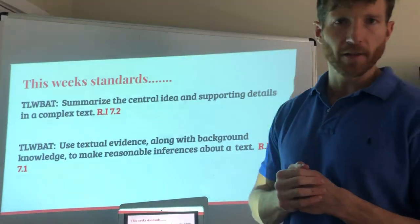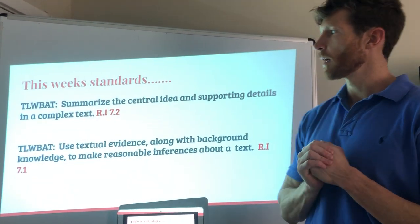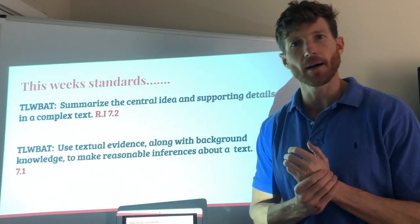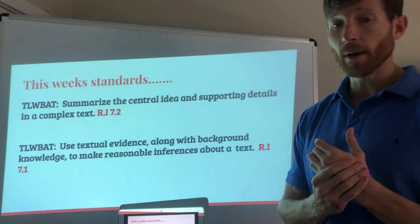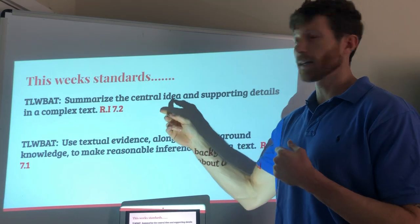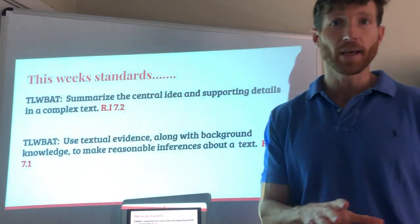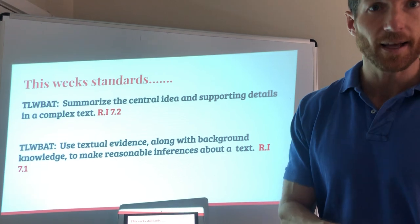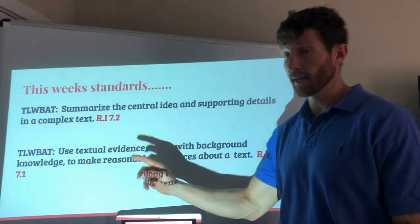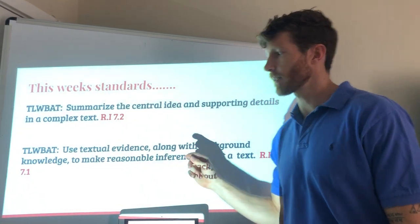Our standards for this week: we've got RI 7.2 — summarize a central idea and supporting details in a complex text. When we last left school we were really working on finding the central idea in a complex text. This week we're going to take that skill and build on it, working on summarizing central idea and supporting details in a complex text.